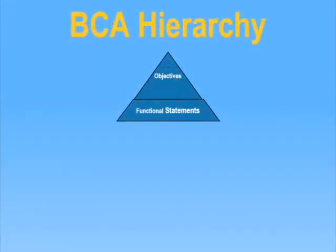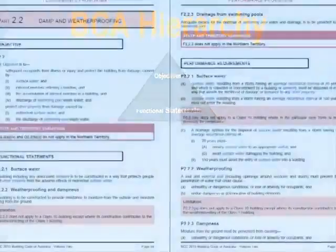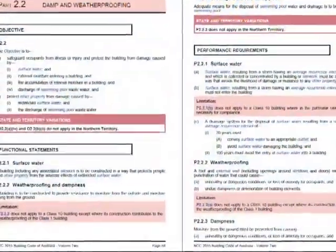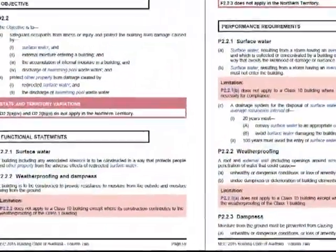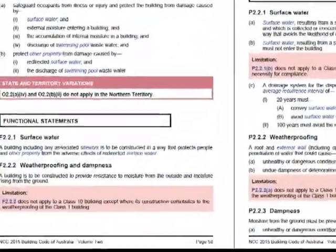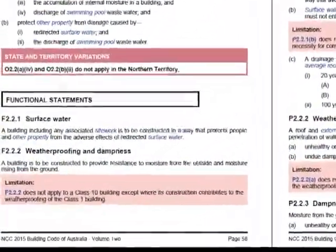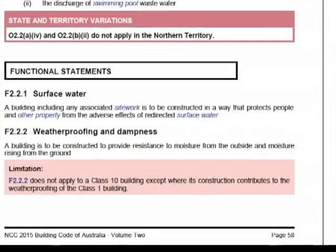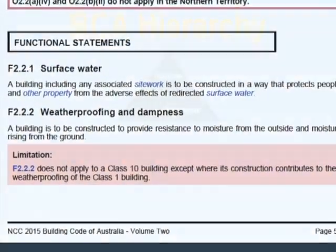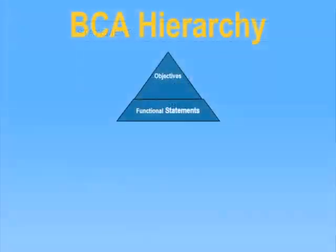Level 2 is the functional statements. These statements basically describe how the building and the building elements will achieve the objectives. They provide an outline of the suitable level of performance that must be met.